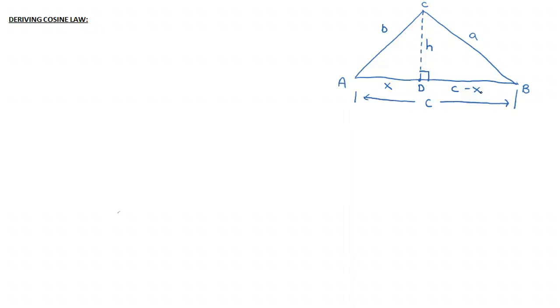So what can we then say? Well, we can start by pulling out a couple ideas from this. So the first thing that we can say is we can say that B squared is equal to H squared plus X squared. Right? And that's from the Pythagoras theorem here looking at triangle ACD.